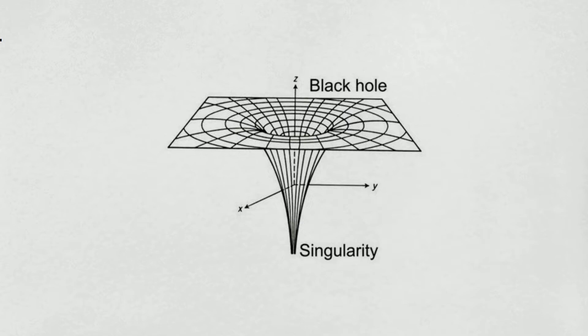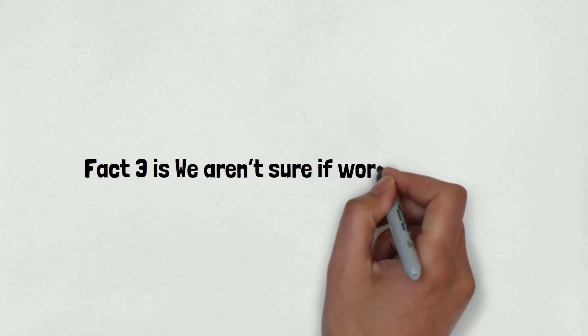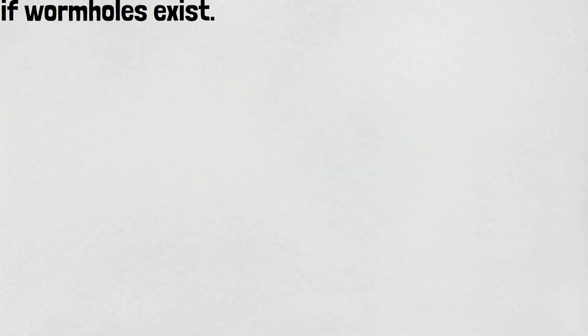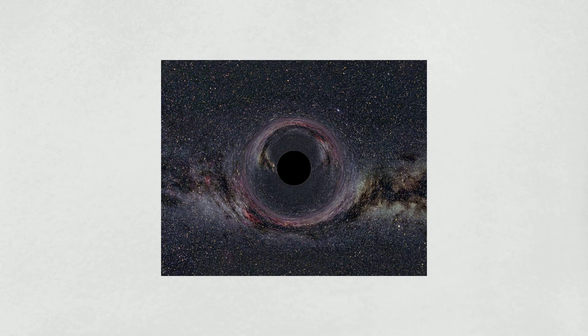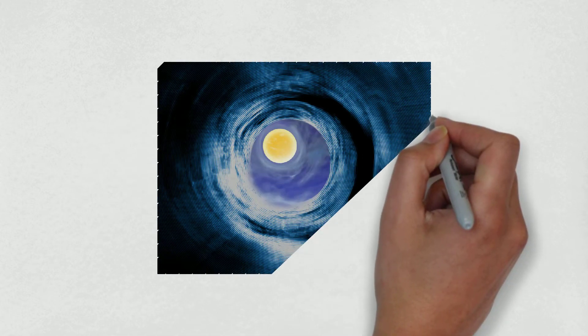Fact number three is we aren't sure if wormholes exist. A science fiction topic concerns what happens if somebody falls into a black hole. Some people believe these objects are a sort of wormhole to other parts of the universe, making faster-than-light travel possible.